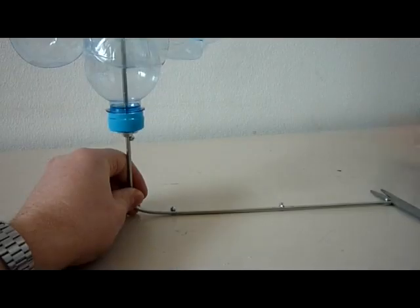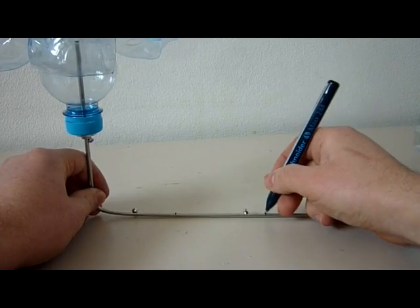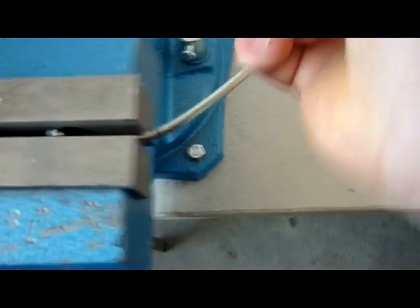Now I am going to bend the bottom of the steel rod to make sure that I can mount it somewhere on my balcony.